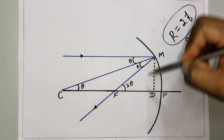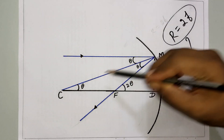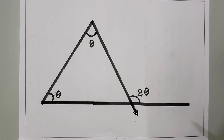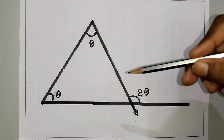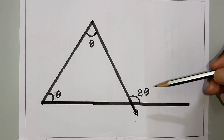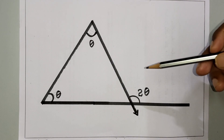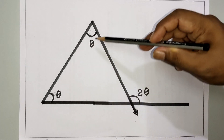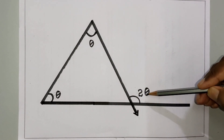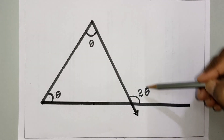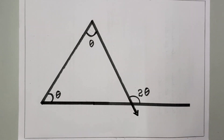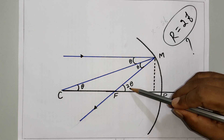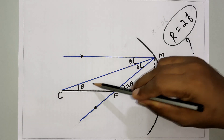Applying the alternate interior angles rule in the diagram, we can identify the theta value. For the exterior angle rule: an exterior angle of a triangle equals the sum of the two opposite interior angles — so we get theta plus theta equals 2 theta. Applying this rule in the diagram, we obtain the 2 theta value.